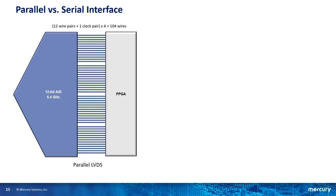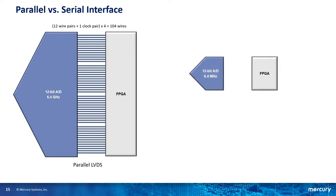FPGAs do have a finite amount of parallel interfaces, so you won't be able to support more than about two channels of data converters on most FPGAs. The other solution is to use gigabit serial interfaces, where each signal pair is transferring data at much higher rates. And the same 6.4 GHz A to D can be connected to the FPGA with just 8 JESD204 gigabit serial pairs.